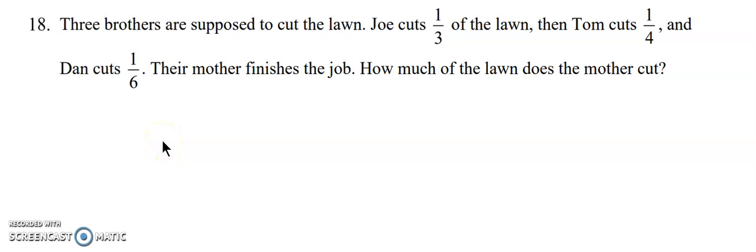Summary Exercise 1.12 Question 18. Three brothers are supposed to cut the lawn. Joe cuts one third of the lawn, then Tom cuts one quarter, and Dan cuts one sixth. Their mother finishes the job. How much of the lawn does the mother cut?